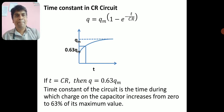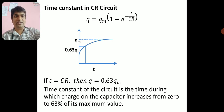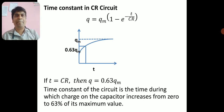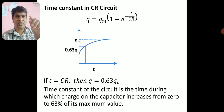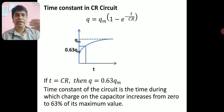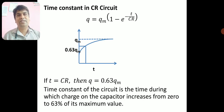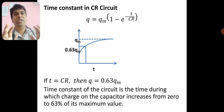Looking at the diagram, there is a curve increasing exponentially with time. I draw a horizontal line at QM (maximum charge), then calculate 0.63 × QM and draw a horizontal line at that value, which touches the curve at some point. From that point I draw a vertical line to the time axis — that corresponding time is the time constant. So τ = C × R.